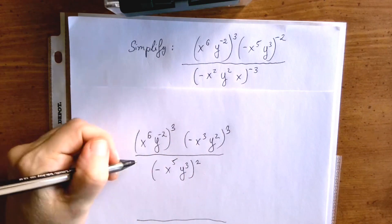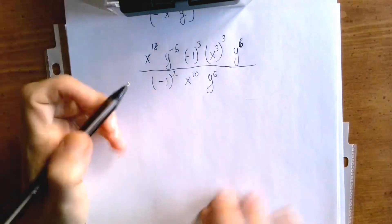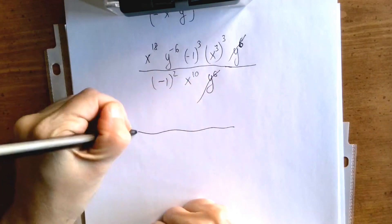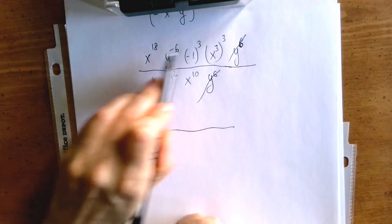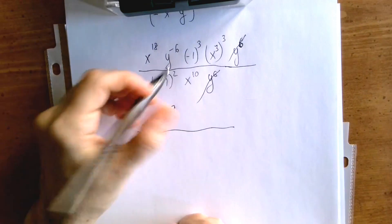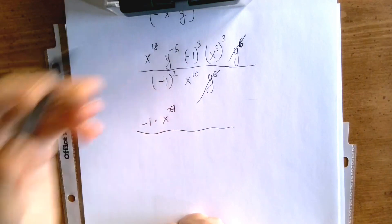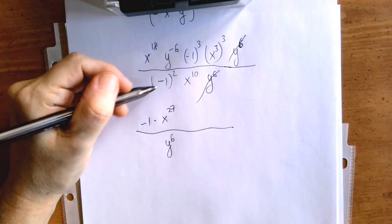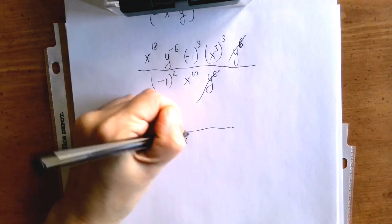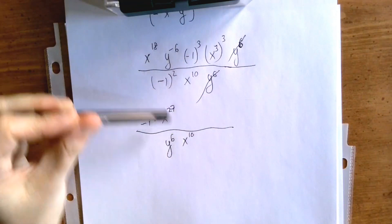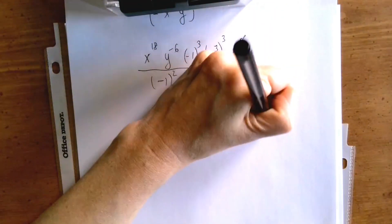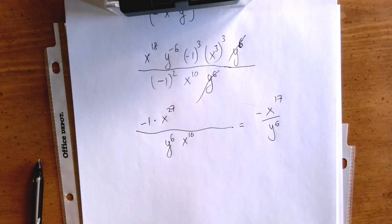So y to the 6th cancels. And I'm going to bring forward the numbers. So negative 1 to the 3rd power is minus 1. x to the 18 plus 9 is x to the 27th power. y to the negative 6 which we can rewrite as y to the plus 6 downstairs. Minus 1 squared is plus 1. And x to the 10 just sits there. So now the only thing that's left is to simplify between x to the 27 and x to the 10. So the answer is going to be minus x to the 17 over y to the 6. Which is not a surprise because we have solved this problem already.